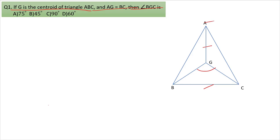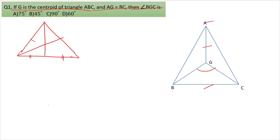To solve this, we need to know what a centroid is. In a triangle, we draw a median — a line drawn from a vertex to the opposite side, dividing that side into two equal parts. Drawing medians from all three vertices, their meeting point is called the centroid, represented by Z. The centroid divides each median in a 2:1 ratio.